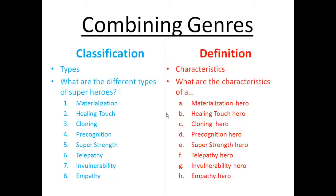The first essay in this class is going to combine classification and definition genres. Your essay will look at what are the different types of superheroes — the author lists eight different types. Then you are going to look at what are the characteristics of each of these superheroes, and again the author lists eight types. Understanding the classification and definition of the superheroes presented in the article is the first step in essay number one.